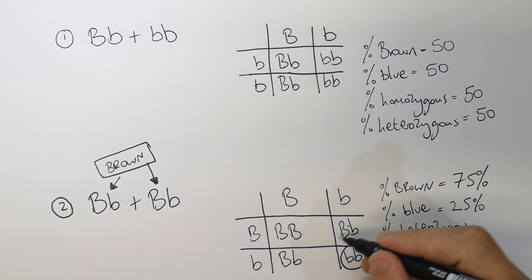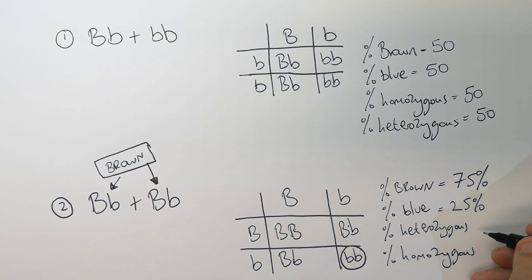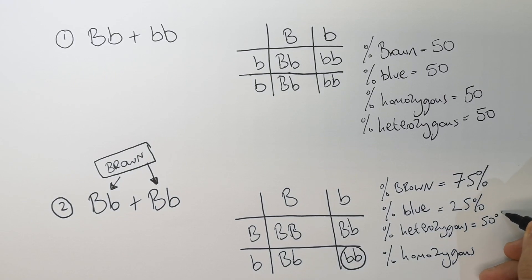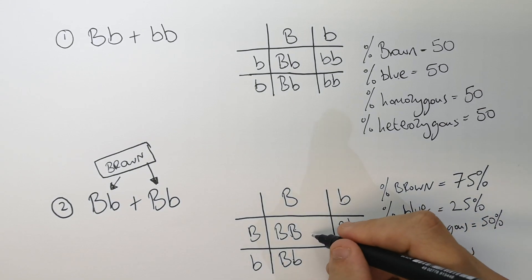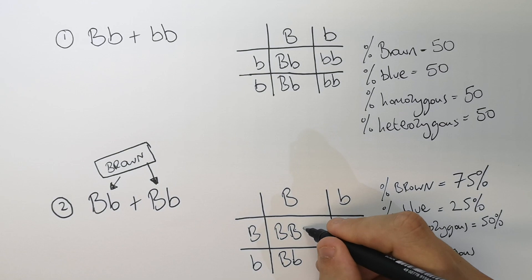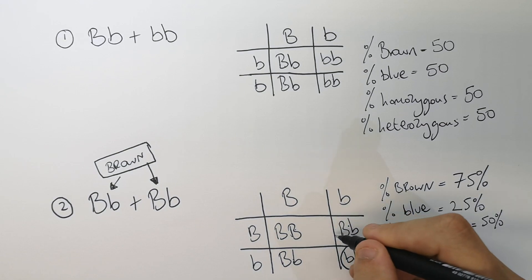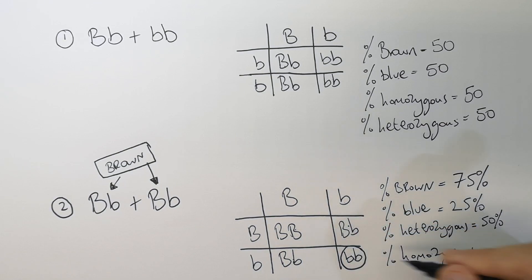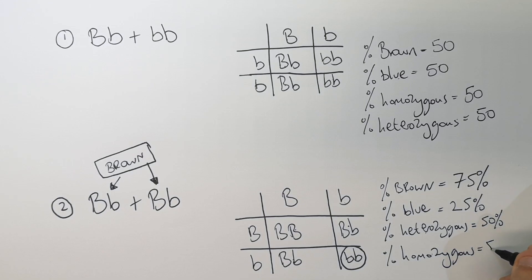Heterozygous means different alleles — big B, little b. So two out of four are going to be heterozygous big B, little b. Whereas the homozygous genotypes are going to be big B, big B — that's a homozygous genotype — and little b, little b, which is also a homozygous genotype. So that will also be 50%.